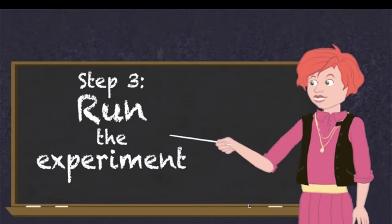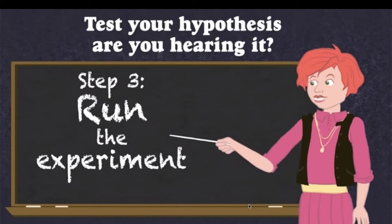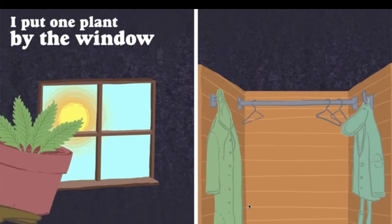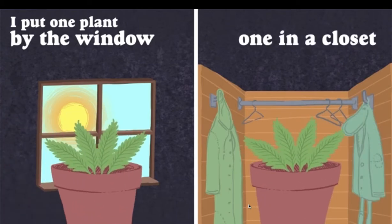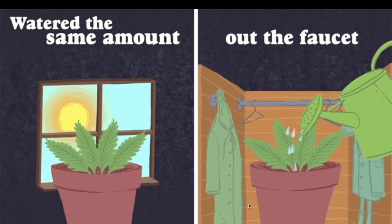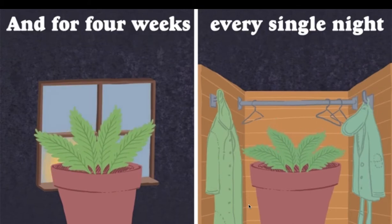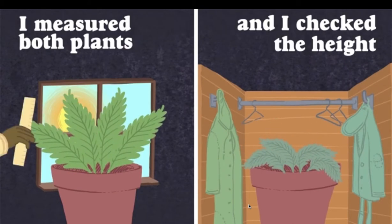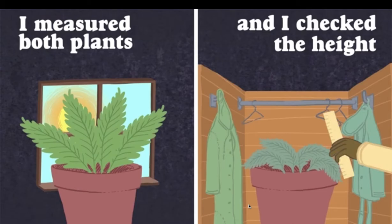Step three, run the experiment. Test your hypothesis. Are you hearing it? I put one plant by the window, one in the closet. Water them the same amount out the faucet. And for four weeks, every single night, I measure both plants and I check the height.